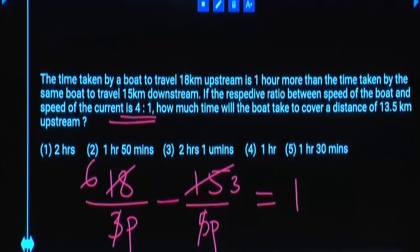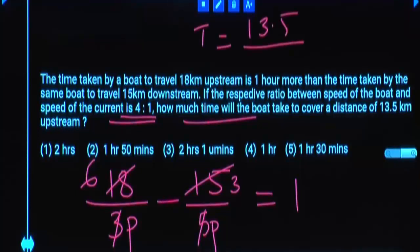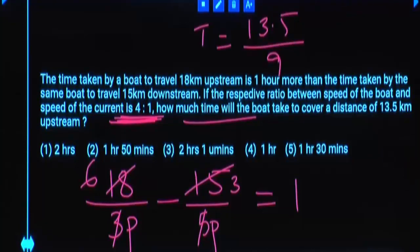Now calculate the time to cover 13.5 kilometers upstream. Upstream speed is 3 parts, and 1 part equals 3, so 3 parts equals 9 km per hour. Time equals 13.5 divided by 9, which is 1.5 hours — that is 1 hour and 30 minutes.